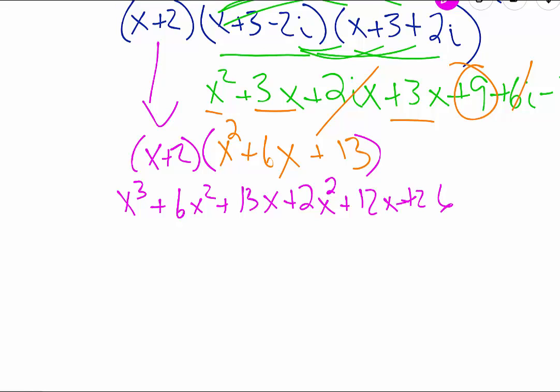And when we add all of that together, we are left with x³. 6x² plus 2x² gives us 8x². We have a 13x and a 12x to get us 25x. And then we drop down that 26 there at the back.